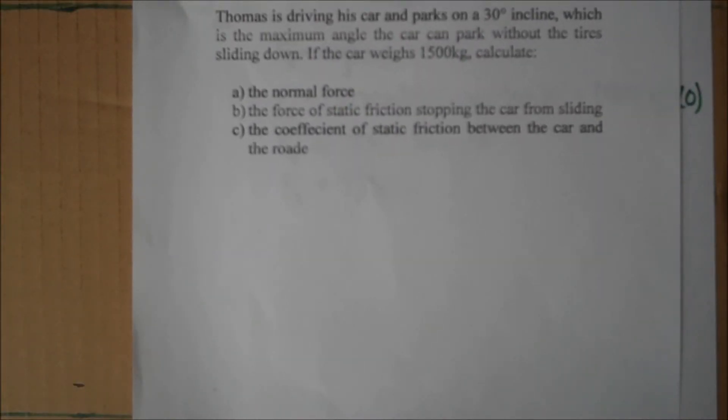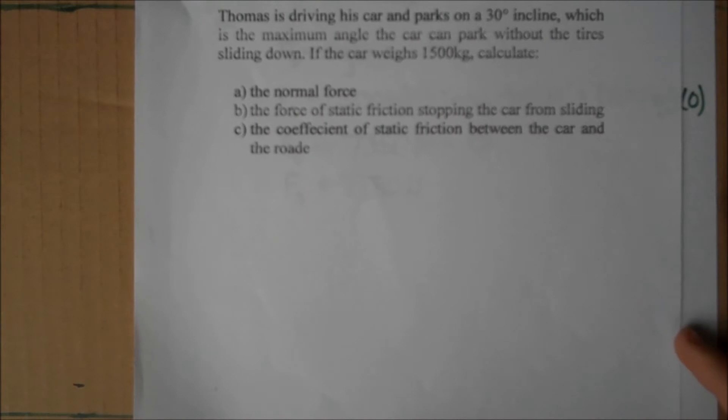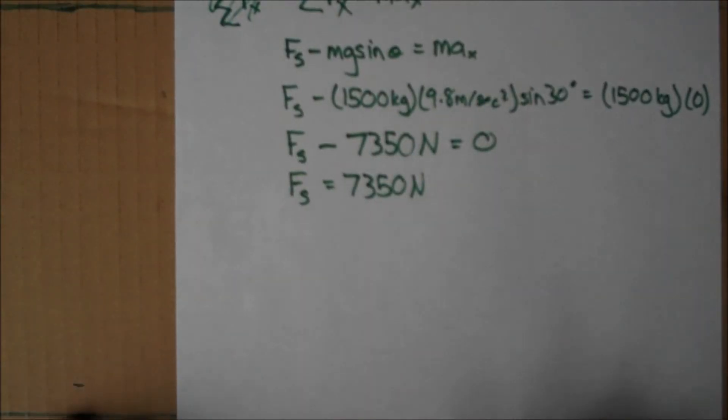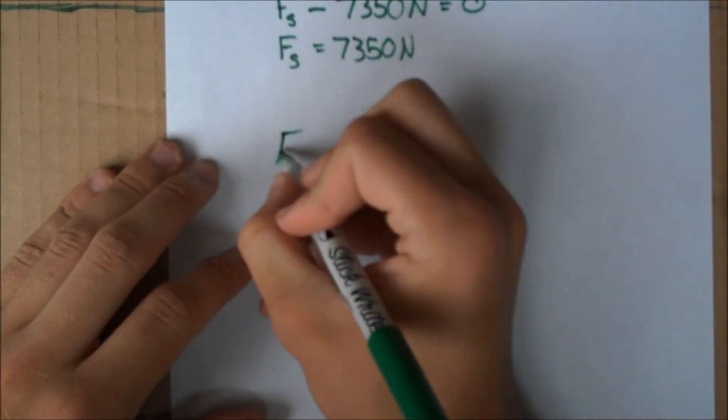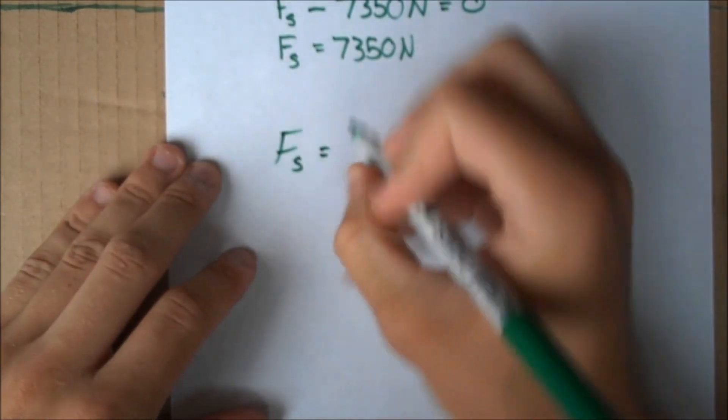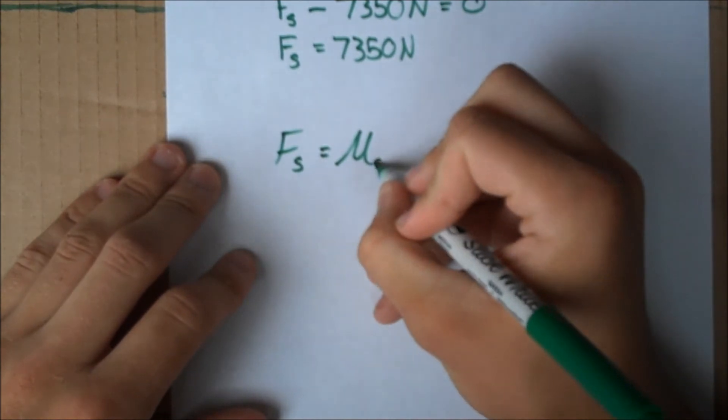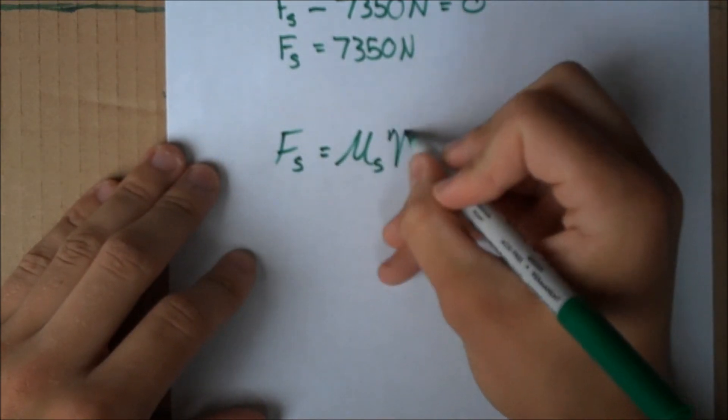Moving on to part C, we want to find the coefficient of static friction between the car and the road. If we want to find that, we can use the equation: the force of static friction equals the coefficient of static friction times the normal force.